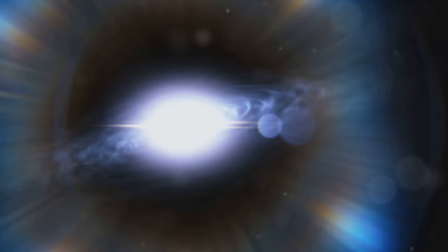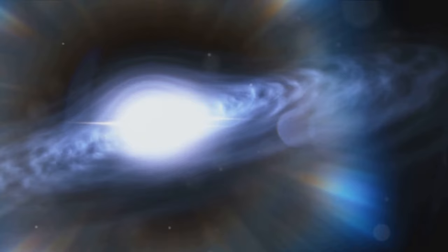This is the black hole's dinner plate, a buffet of cosmic debris that's been unlucky enough to get too close. It's this accretion disk that makes black holes visible to us, despite the fact that they themselves swallow light.